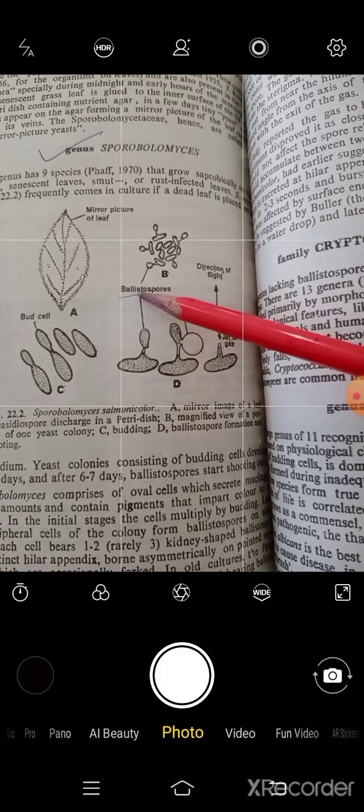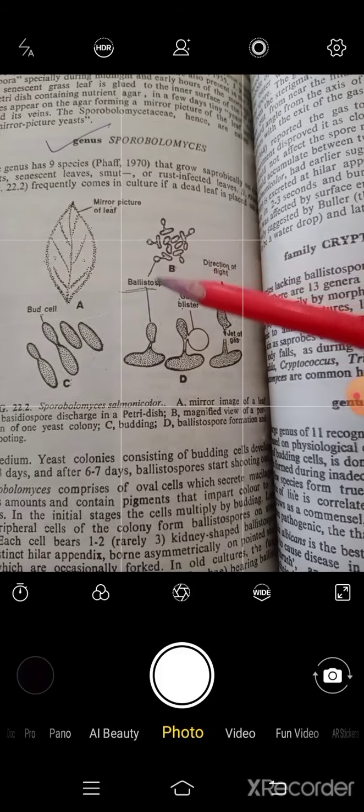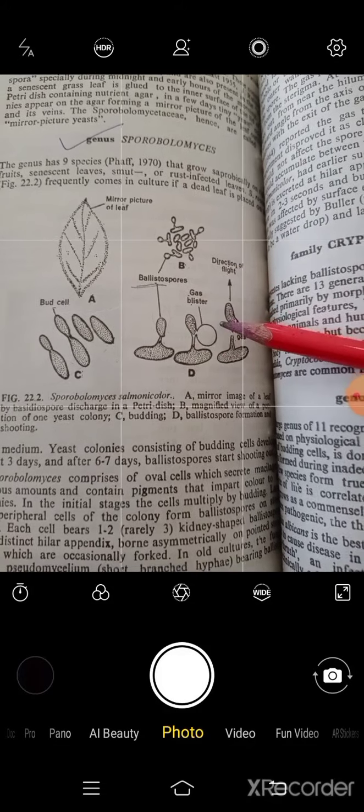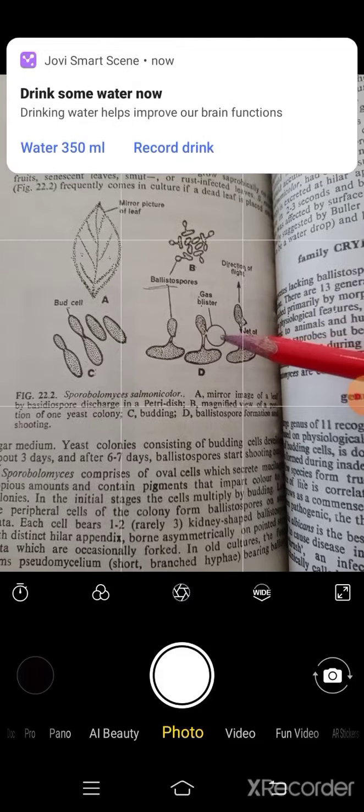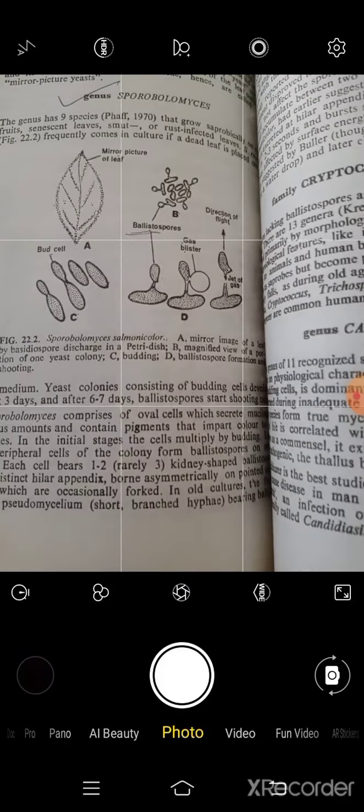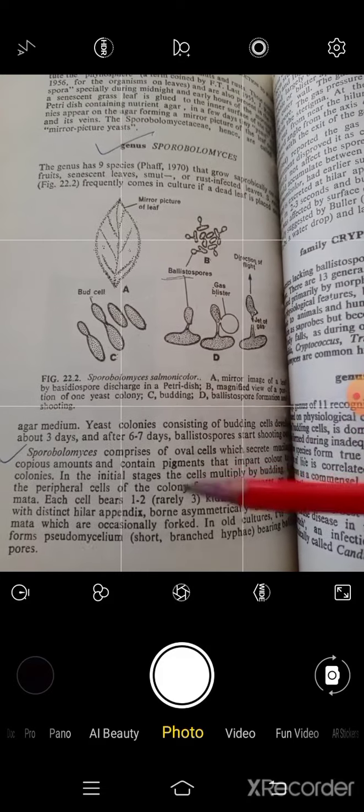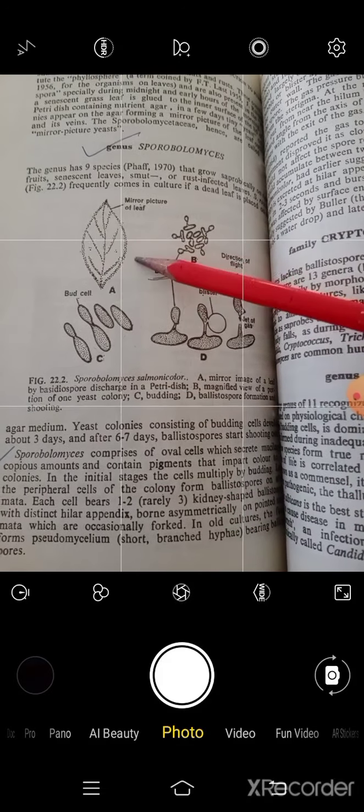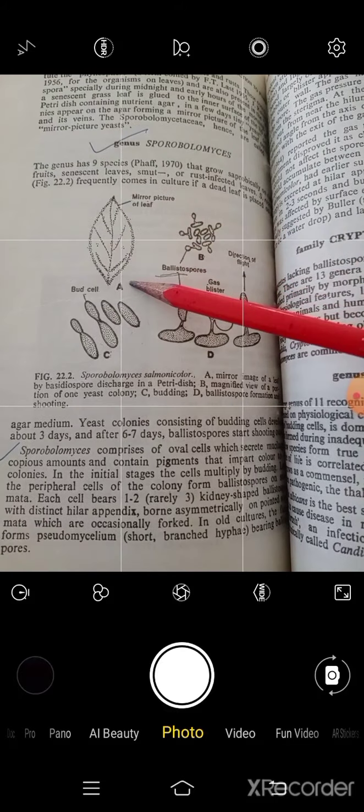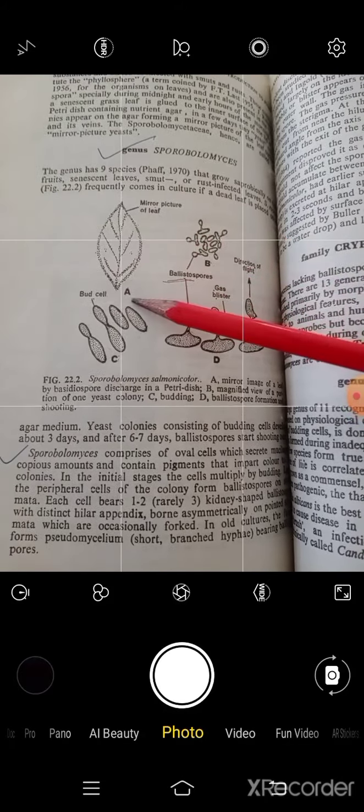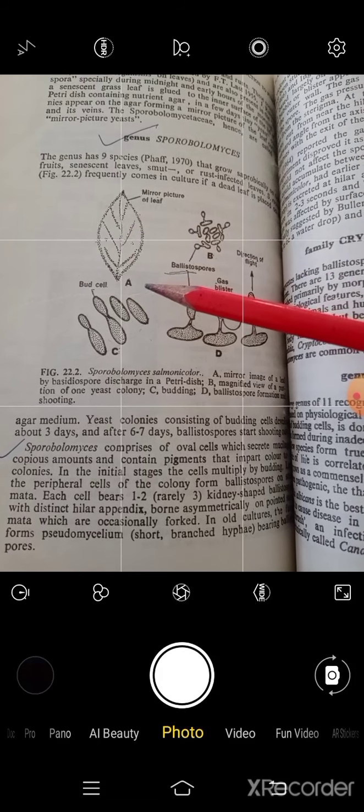Blastospores - this term is from the blast. These spores are released with the help of a jerk, a pressure, a gas blister. It is a gas blister. I will tell you how the mirror picture of the leaf which you have to obtain, and here they will increase their number with the help of budding.